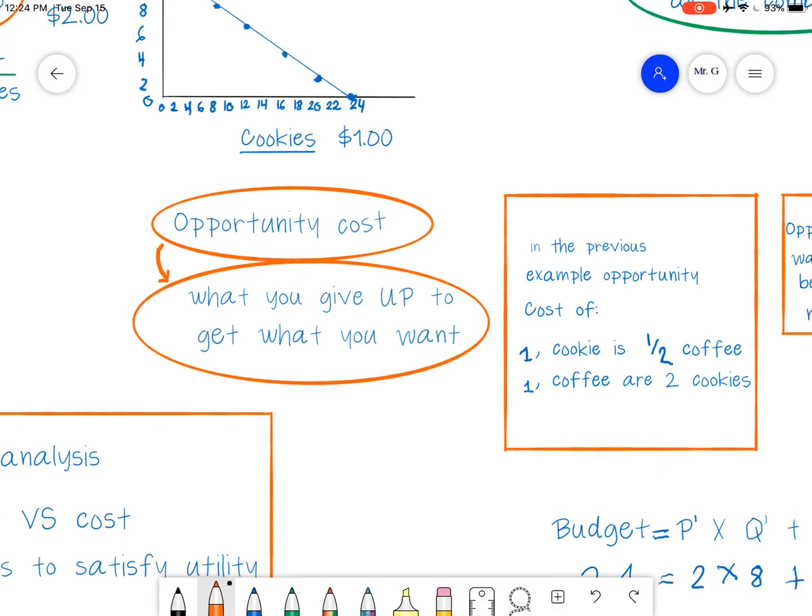So if you make a choice, so I choose, I'm going to have 12 coffees. Well, what is my opportunity cost? Well, it's going to be that I can't have any cookies. In this case, 24 cookies. If I have 12 coffees, I can't have 24 cookies too. I don't have that kind of money. So my opportunity cost of having nothing but coffees is I can't have any cookies.